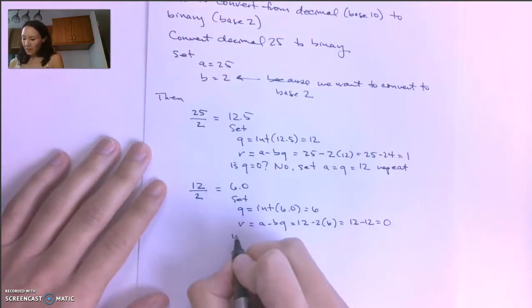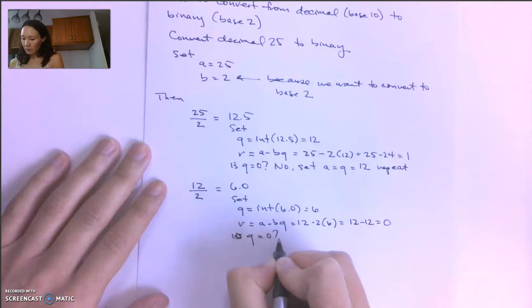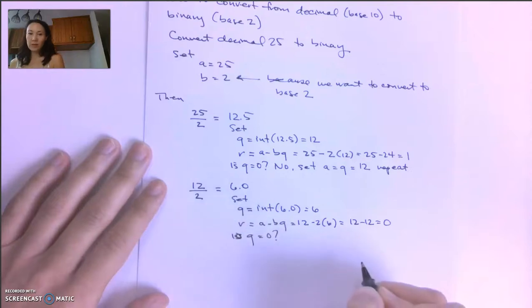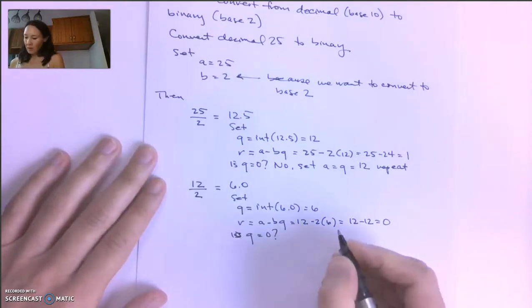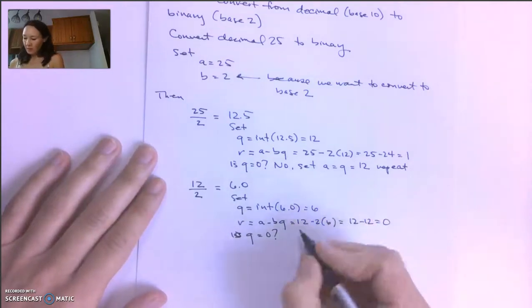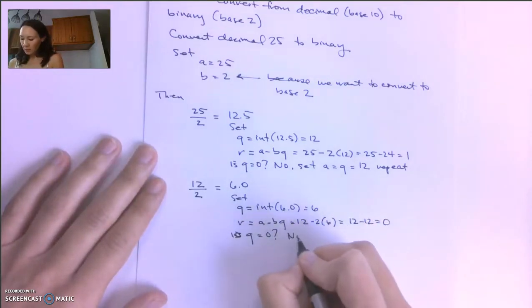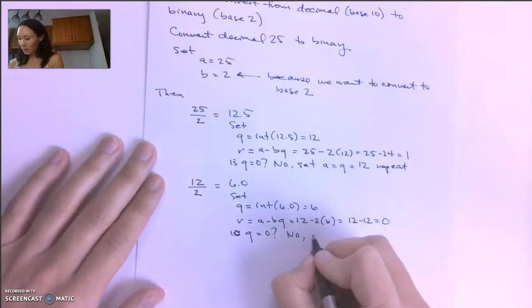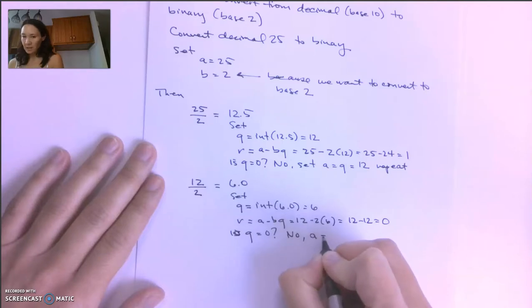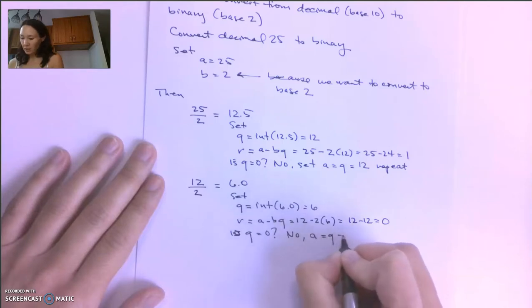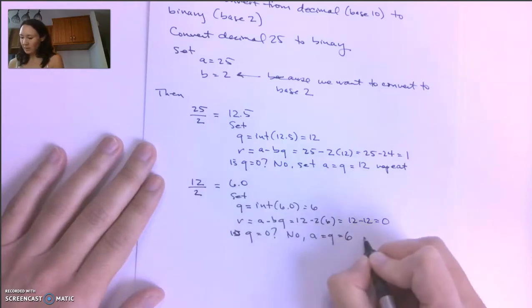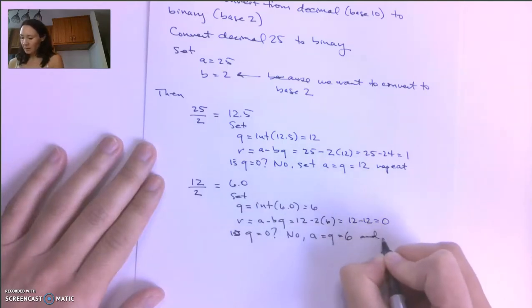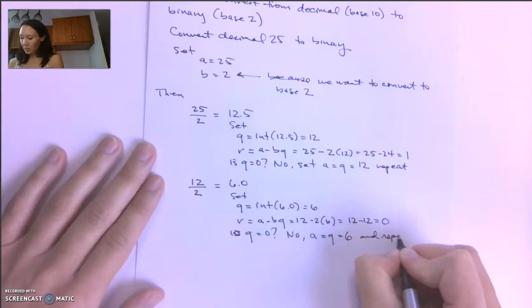And then we ask: is Q equal to 0? Our Q is 6, so the answer is no, so we're going to repeat the algorithm. Set A equal to Q equal to 6, and repeat.